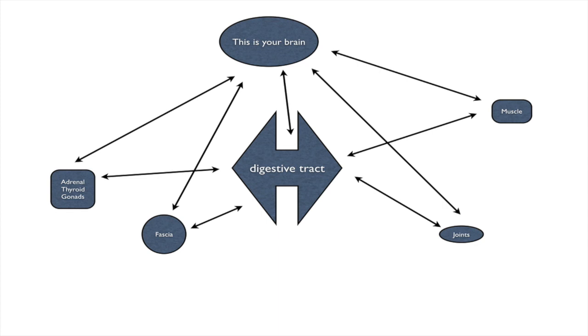We call this the neuroendocrine immune system. You even can call it the neuromusculoskeletal endocrine immune system. In other words, there really is no separation in the body. All of these things together are communicating.